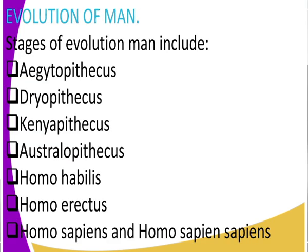Let us look at the evolution of man. Man evolved in stages, and we have different stages. The first stage is Aegipithecus, then from Aegipithecus we go to Dryopithecus, then Kenyapithecus, Australopithecus, Homo habilis, Homo erectus, Homo sapiens, and finally Homo sapiens sapiens.